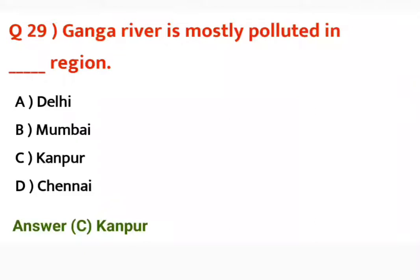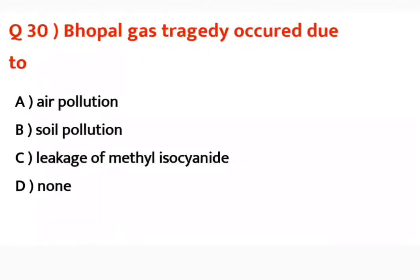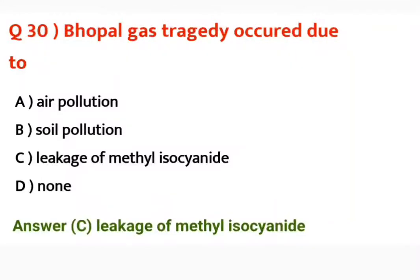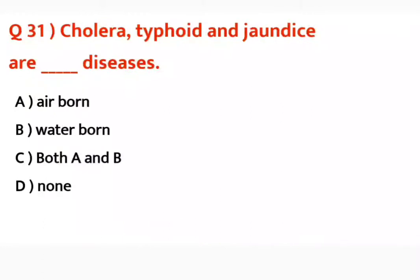Question number thirty: Bhopal gas tragedy occurred due to? Jo Bhopal mein gas tragedy ho gayi thi woh kis se huyi? It was because of leakage of methyl isocyanate — a poisonous gas. Is se bahut saare log mare the.